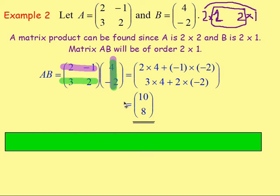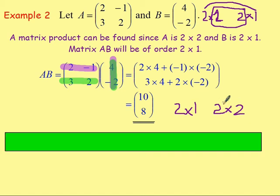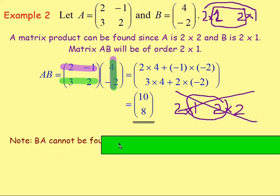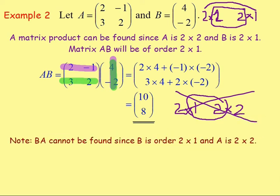If we wanted to reverse that, could we find the matrix product BA? Well, matrix B is still of the order 2 by 1 and matrix A is of order 2 by 2. If we were to work out B times A, these inner numbers are different — 1 and 2 — and if they are different, we cannot find the matrix product. So here, BA cannot be found, since B is of the order 2 by 1 and A is of the order 2 by 2, and the inner numbers that have to be the same are different.